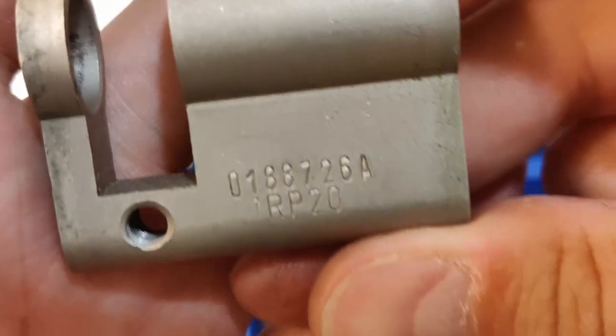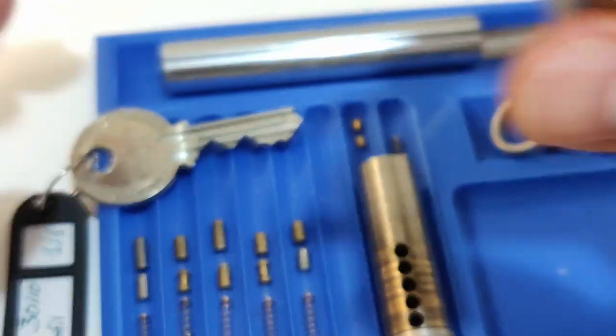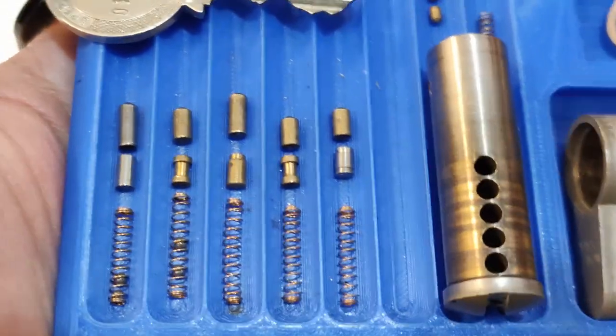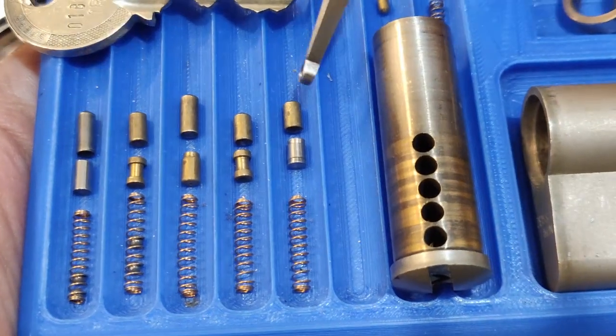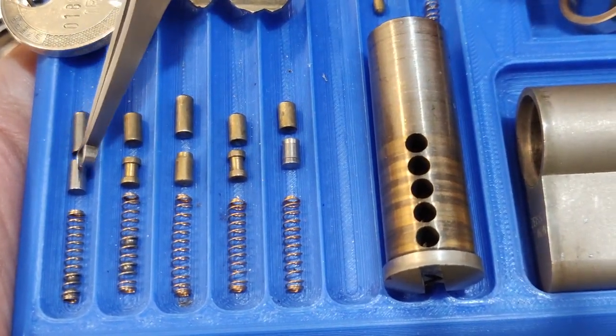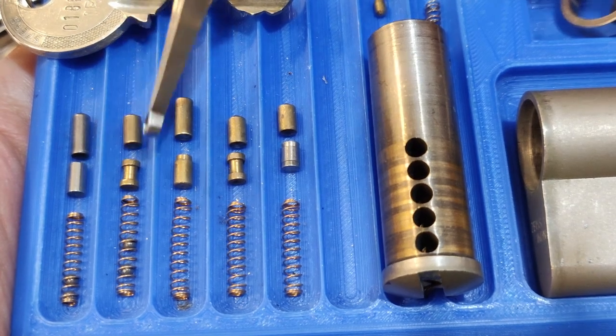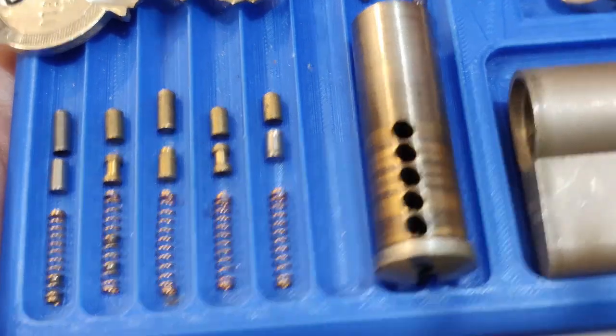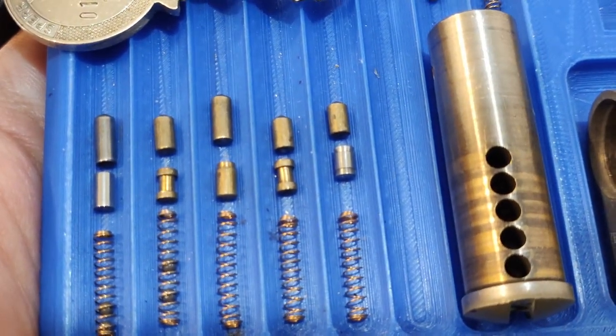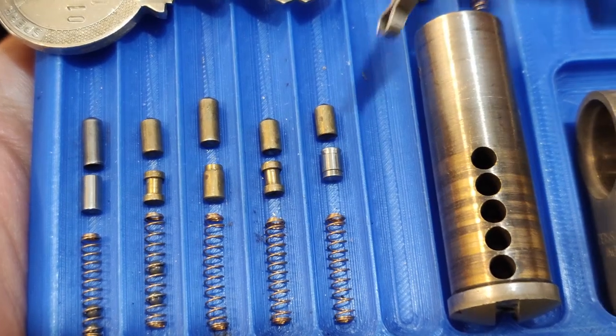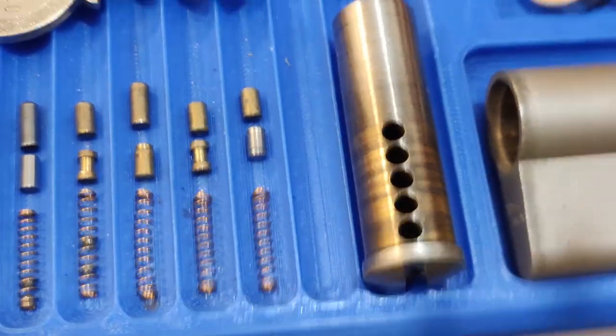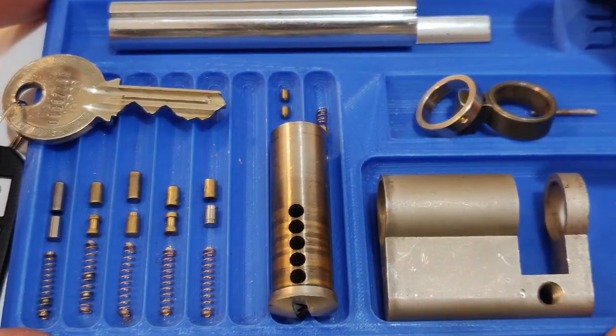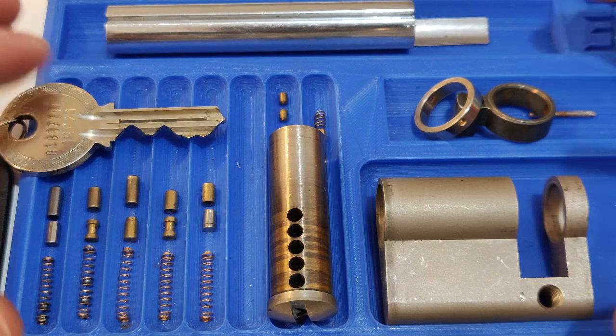So everything is standard. Here is the core, Zeiss Ikon. Let me give you a close up. So all five pins are standard. Drivers: first is standard, second and the fourth one are spools, third one is a T-pin, and the fifth one is ASA-like, very interesting one. Yeah, a bit longer video, but it's a very interesting lock.